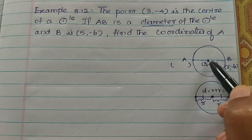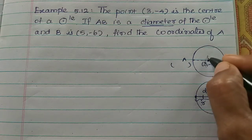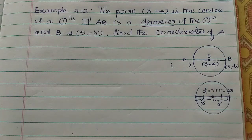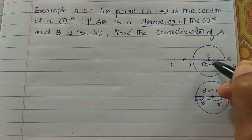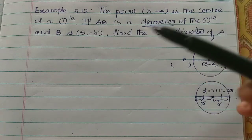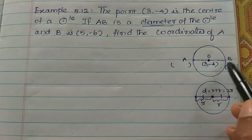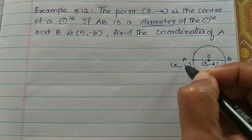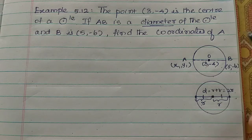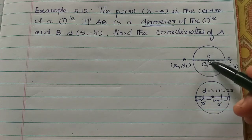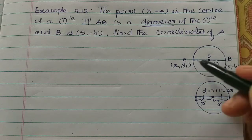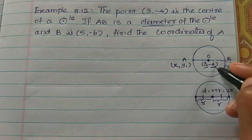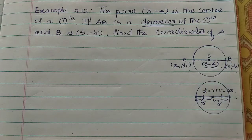Let's say O is the center of the circle at (3, -4). AO and OB are equal values. So O is the center point at (3, -4). AB is the diameter of the circle. B is the given point. We need to find the coordinates of A — that is, find x1 and y1. Since O is the midpoint of AB, we use the midpoint formula and equate the known midpoint values.